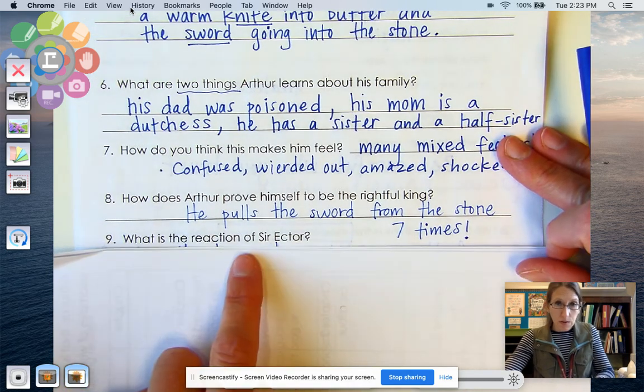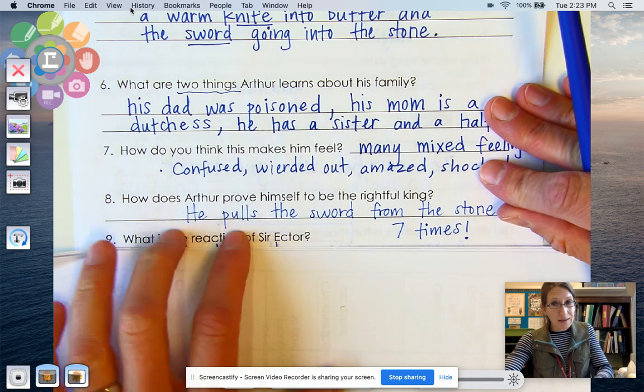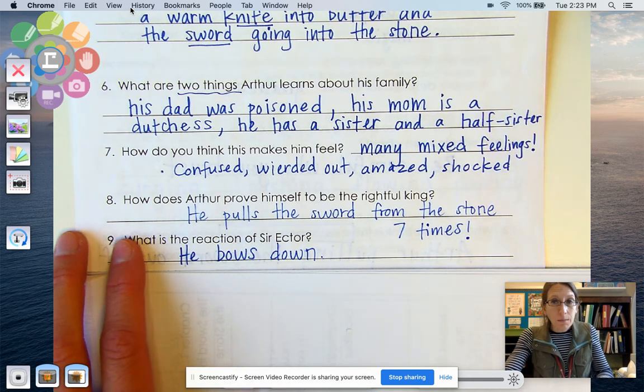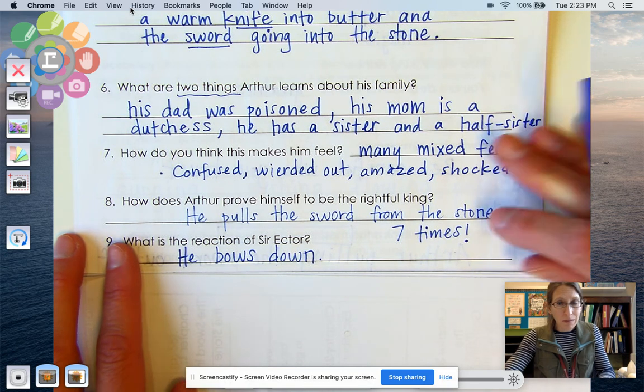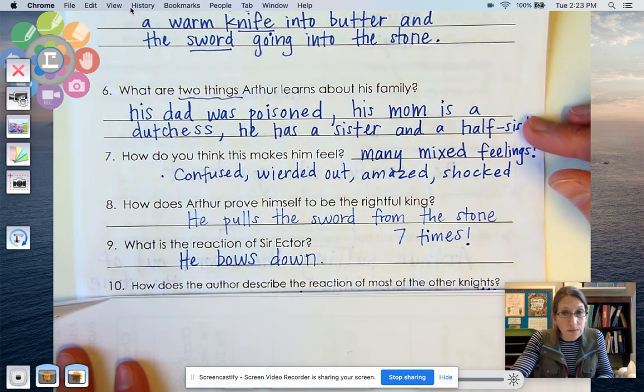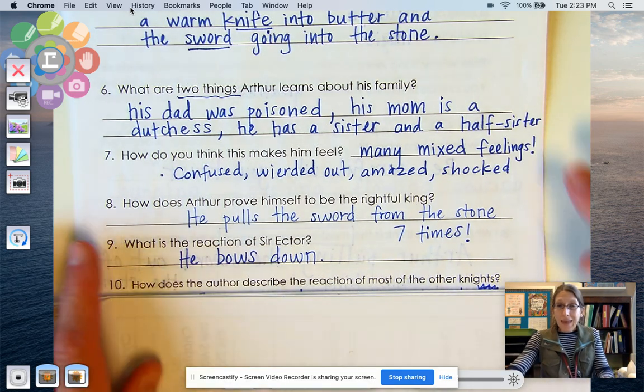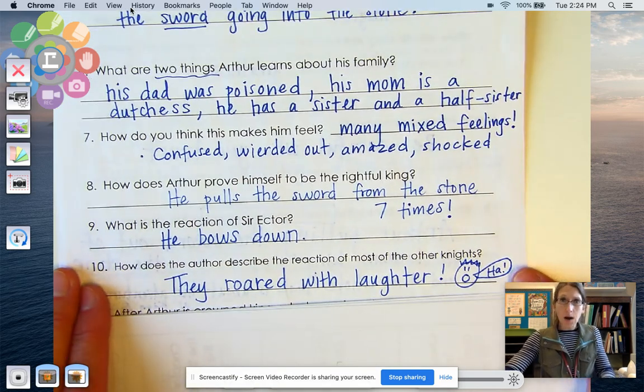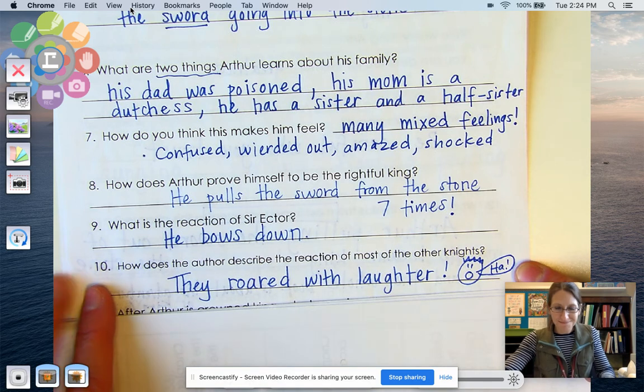And after he pulls the sword out, what is the reaction of Sir Ector? In other words, what does Sir Ector do? Remember, this is kind of, it's like his dad. He bows down before him. Can you imagine if you did something and then your parents bowed down in front of you? You would be like, um, why are you bowing? That would be so weird. All right. Let's see. Number 10. And how does the author describe the reaction of most of the other knights? Do you remember what they did? Yeah, they roared with laughter, didn't they? They were like, are you crazy? This young boy is not even a knight. He's going to be our next king. I don't think so.